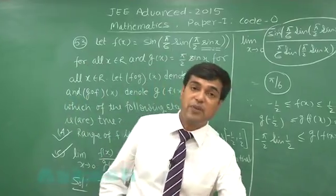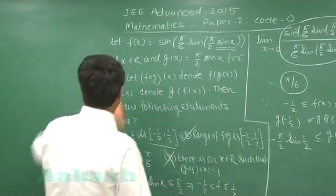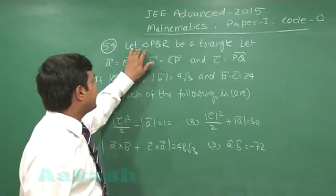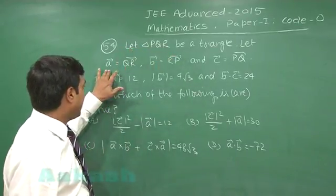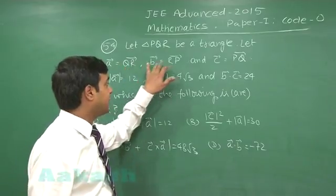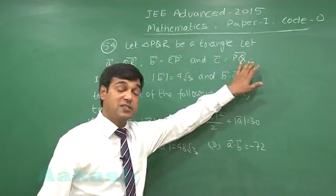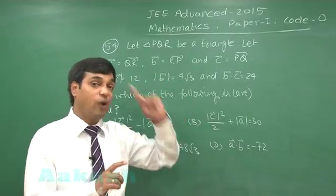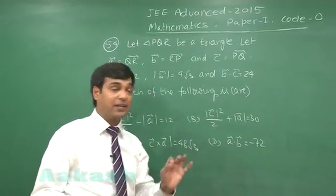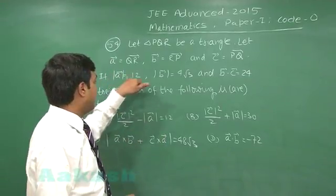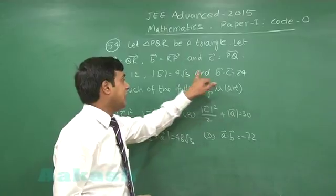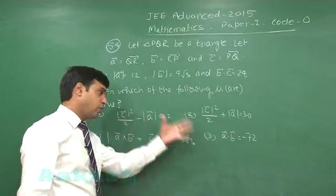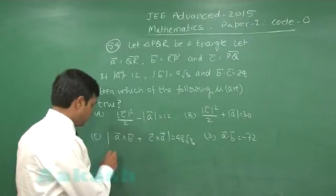Let us go for question 54. Let triangle PQR be a triangle. Let vector a = QR, vector b = RP, and vector c = PQ. Since these vectors are along the sides in order, we have a + b + c = 0 (as vectors). Given |a| = 12, |b| = 4√3, and b·c = 24, we need to determine which options are true.